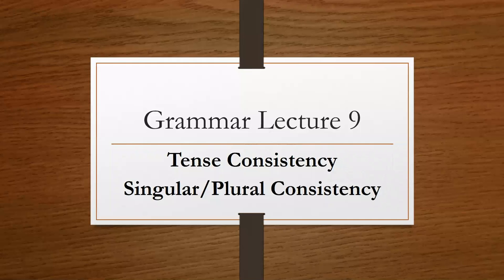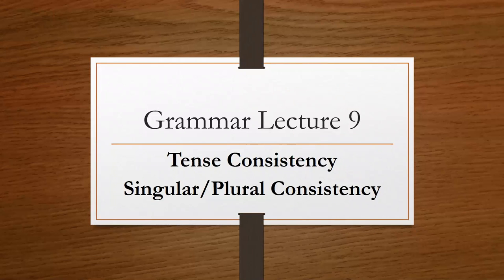Hi there, everyone. This is Grammar Lecture 9. There are two parts in this lecture. The first focuses on tense consistency — being consistent in the way we use tense in sentences and paragraphs. The second part talks about consistency between singulars and plurals, specifically focusing on when we use 'is' versus 'are.' There are other forms like 'was' and 'were,' but we'll focus on 'is' and 'are' in the second half.